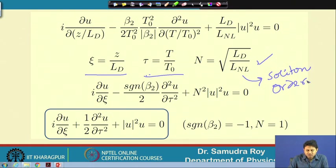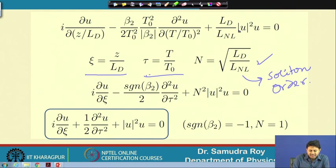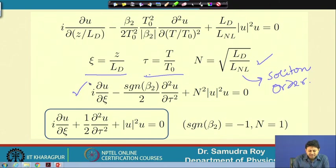Please note: if L_D = L_NL then N = 1. That means we have soliton order 1, sometimes called the fundamental soliton or the fundamental case. If I replace these quantities into the equation I will have: i ∂u/∂ξ − (sgn β₂)/2 · ∂²u/∂τ² + N²|u|²u = 0, where sgn(β₂) means the sign of β₂.